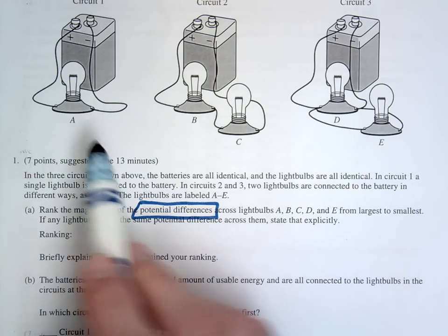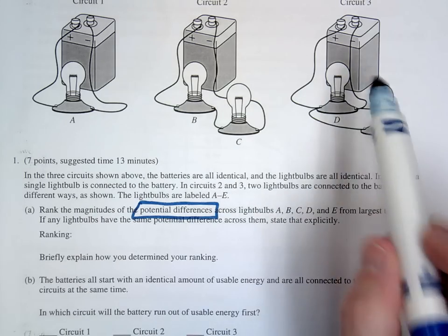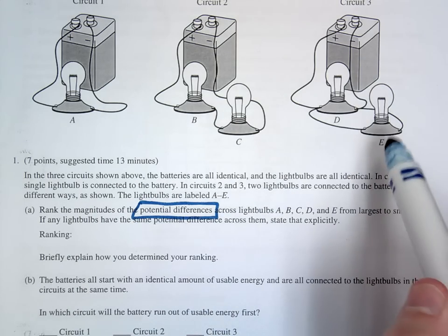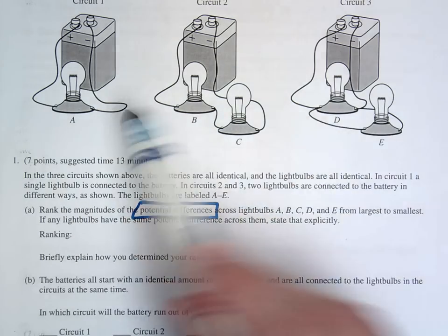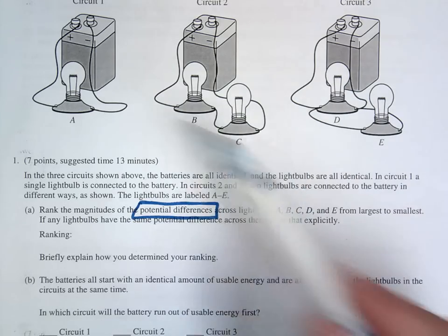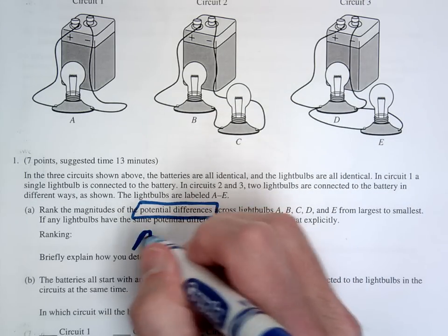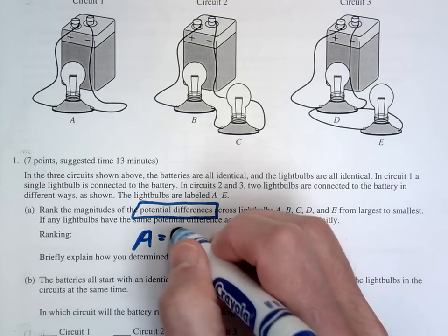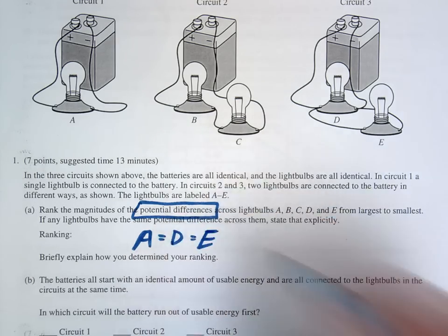So hopefully you can see that A is directly connected to the battery, D is directly connected to the battery, and E is directly connected to the battery. So these should have the full voltage of the battery and they would be the same. So we would say A and D and E are all equal to each other.